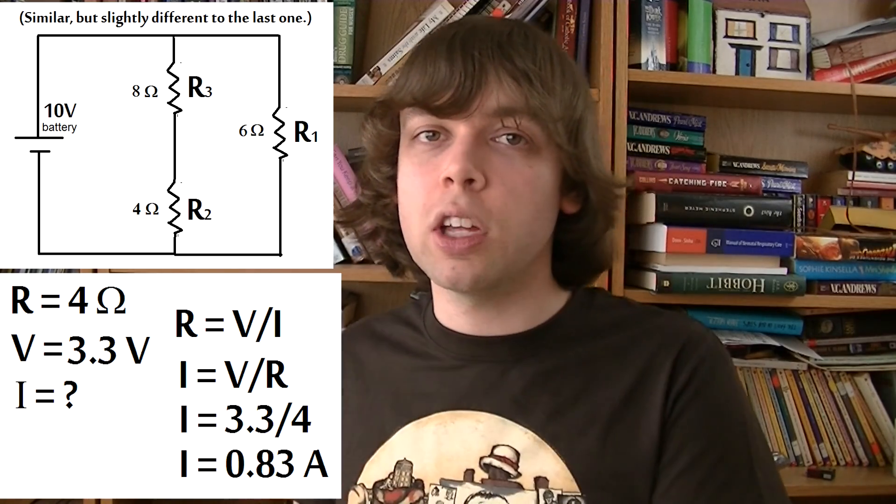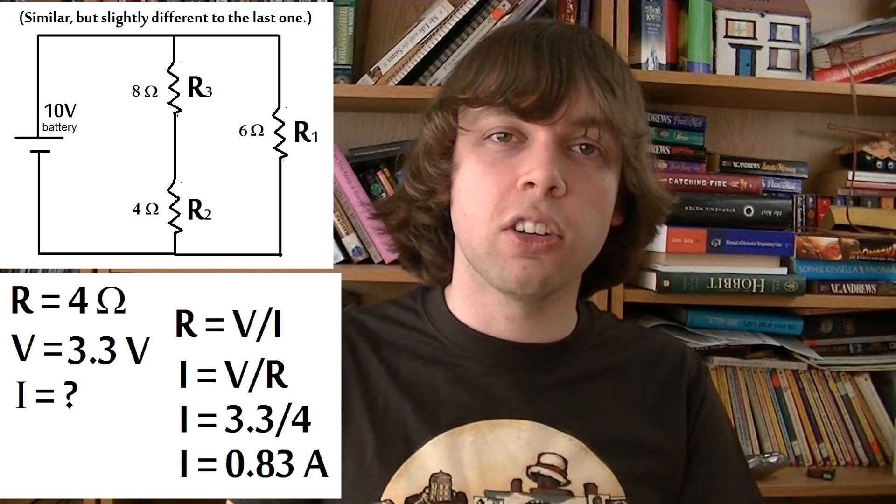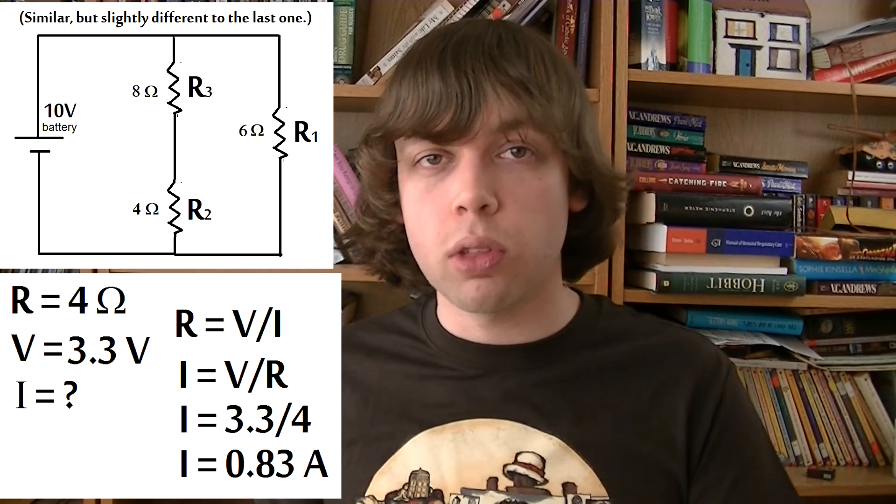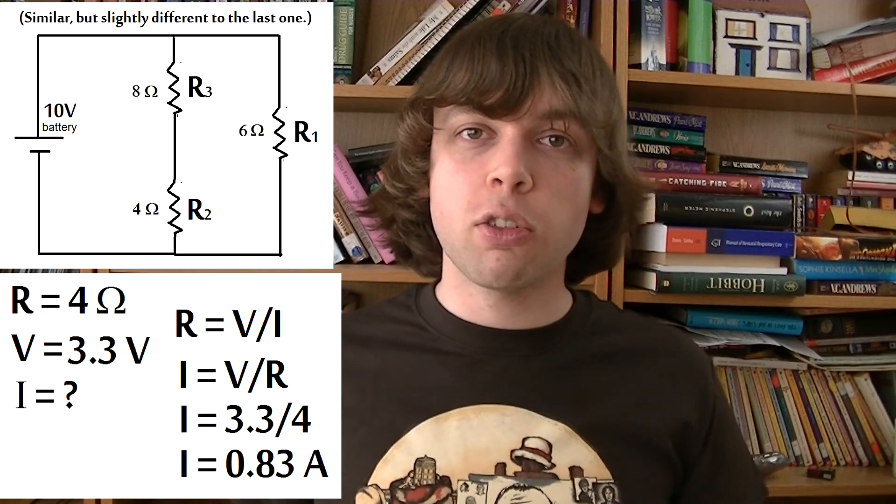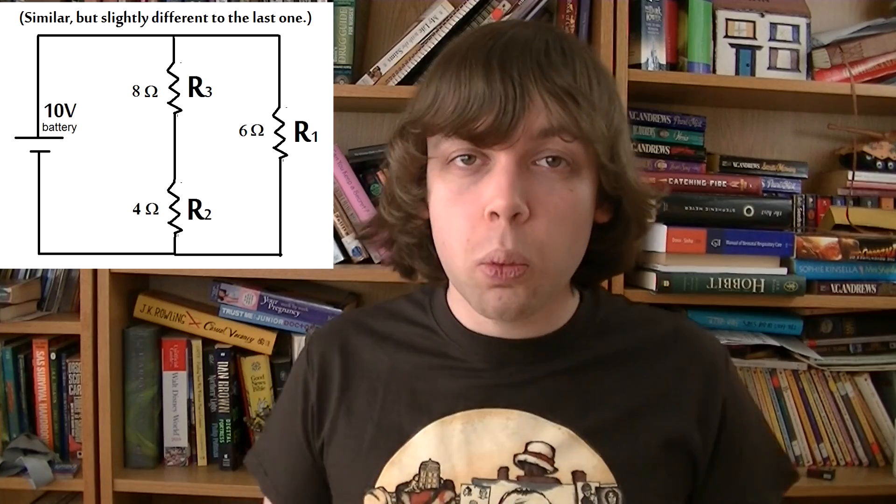we can plug 3 and a third volts into our R equals V over I equation and calculate the current flowing through that resistor. If we solve for the current, we get 0.83 amps. So that's one way of solving it.